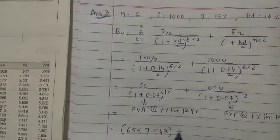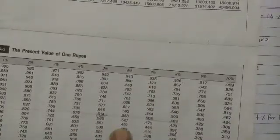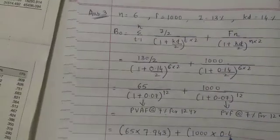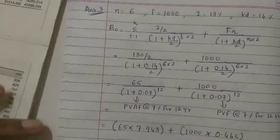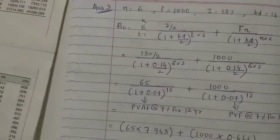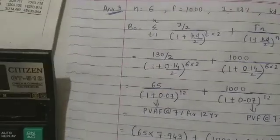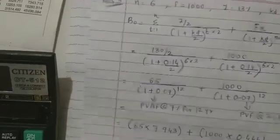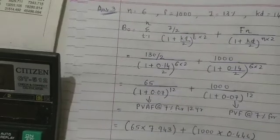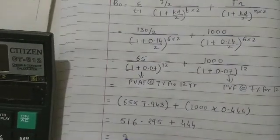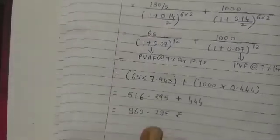Plus 1000 multiplied by the present value factor at 7% for 12 years, which is 0.444. So 65 × 7.943 = 516.295, plus 1000 × 0.444 = 444. Addition gives rupees 960.295. That is the value for maturity period six years.